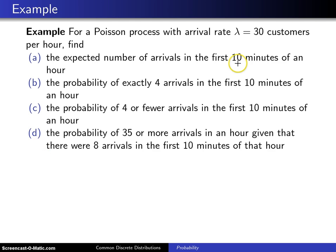For part A, we have a problem: differences in units. This comes up quite often in Poisson processes, so we've got to decide whether to use minutes or hours. You can use either — it doesn't matter — but I'm going to go ahead and decide to call these 10 minutes one-sixth of an hour.